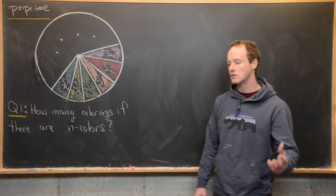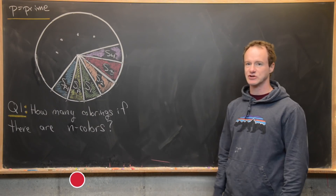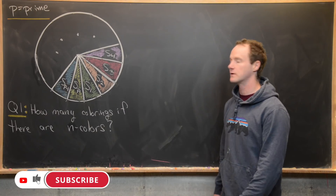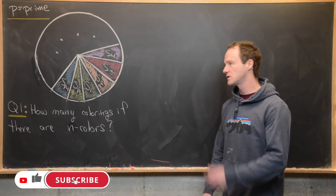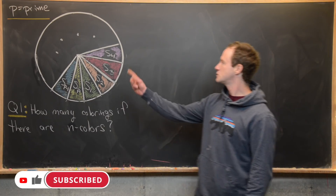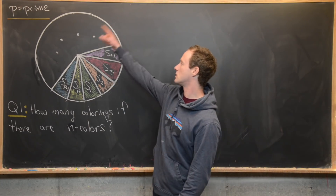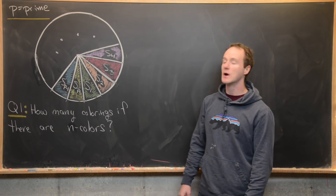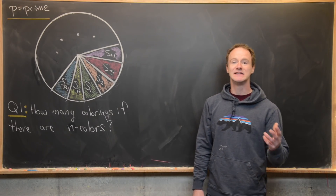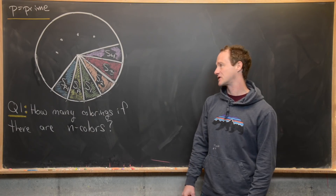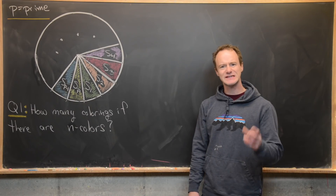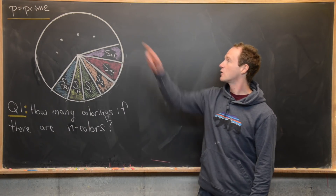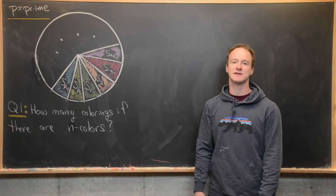Here we're going to look at an interesting counting geometry problem that will lead us to a proof of Fermat's Little Theorem. So let's look at the setup. Suppose we've got a circle and we've divided that circle into P different but equal sectors — a sector of a circle is like a pizza slice — and here P is prime.